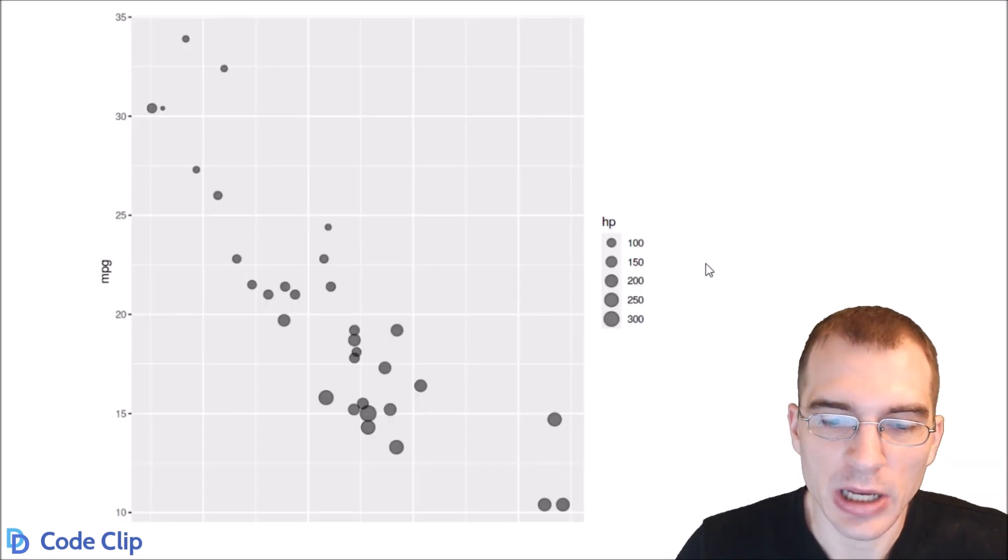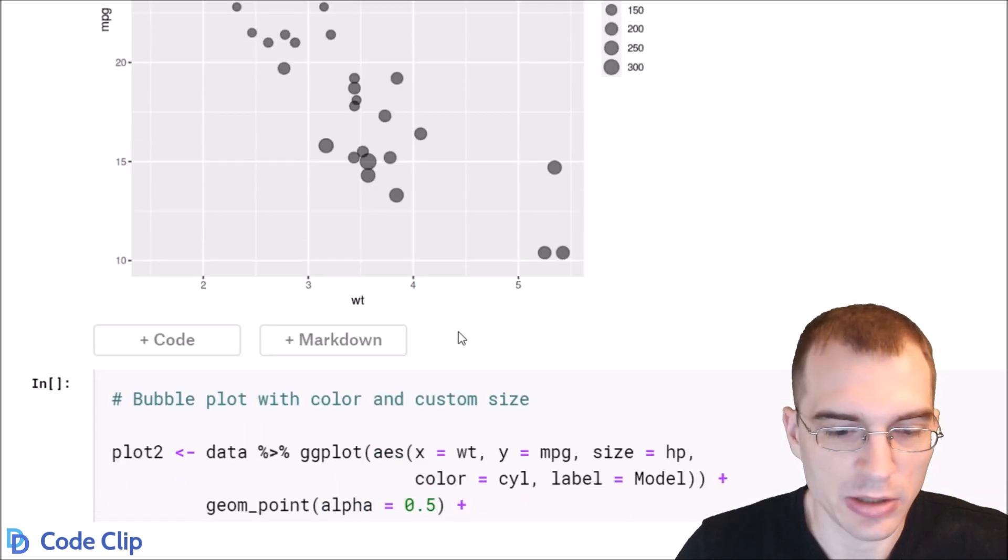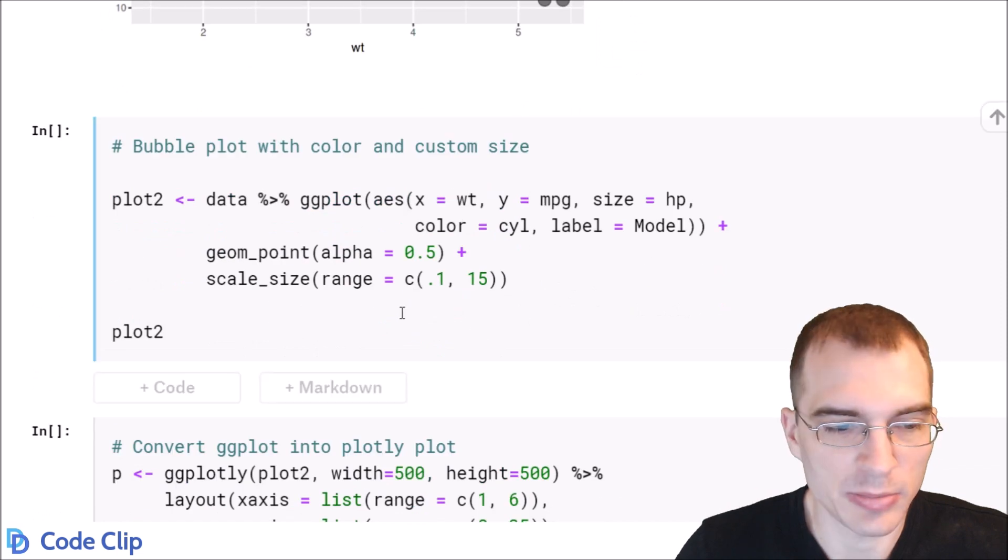You can see we have made a bubble plot with horsepower set to the size of the points, and we can probably make this nicer by adding some color and maybe setting a greater range for the size of the dots.